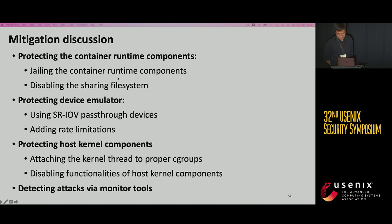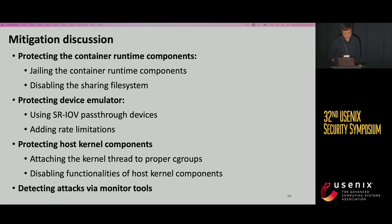Let's discuss some mitigations. For the container runtime component, you can jail the container runtime components or disable the sharing file system. To protect the device emulator, you can use SR-IOV pass-through devices or add rate limitations to the specific device emulator. To protect the host kernel components, you can attach the host kernel thread to proper cgroups, or disable some functionalities of host kernel components to mitigate the risks directly. Besides these methods, you can also use monitoring tools to detect operation forwarding passes and operation forwarding attacks.